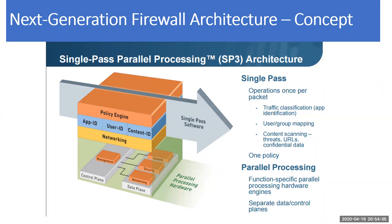What does the next generation firewall architecture look like? Here you can see the single pass parallel processing architecture, where in a single packet it is processing via the policy engine — processing App ID, User ID, Content ID — as well as all the networking functions such as checking the routing. Similarly, it is parallel processing the data traffic as well as the control plane traffic, which is actually the management plane.